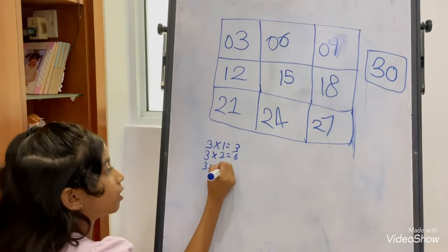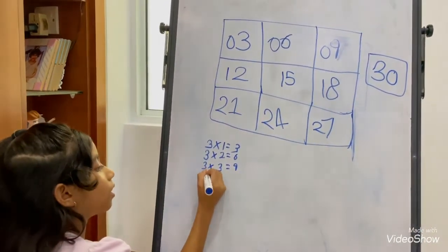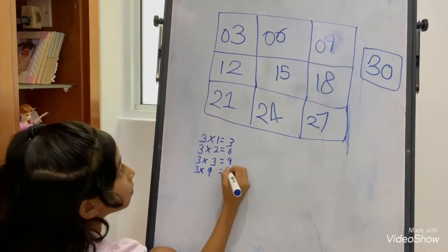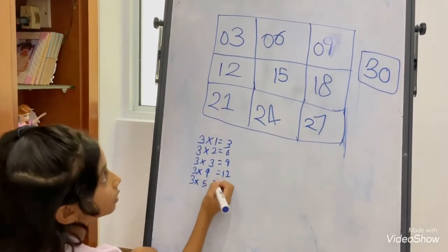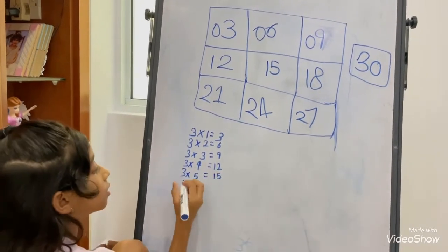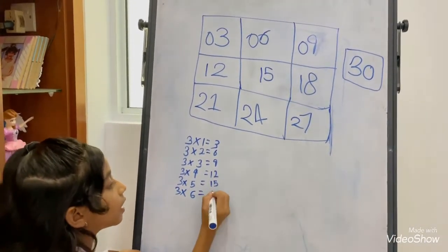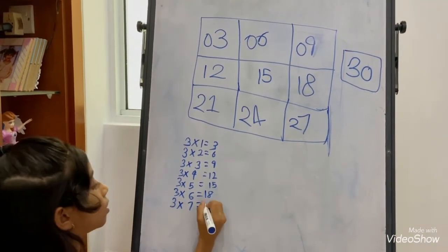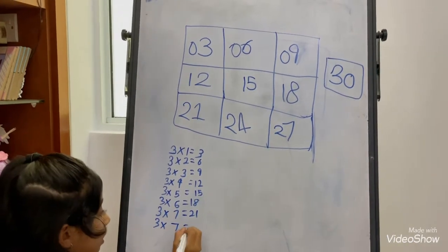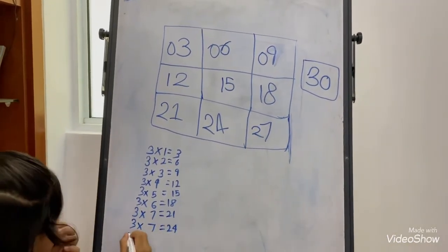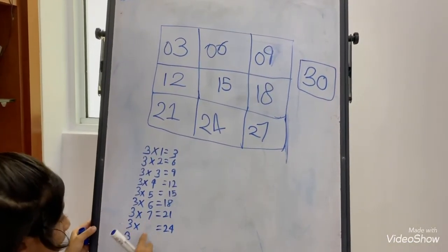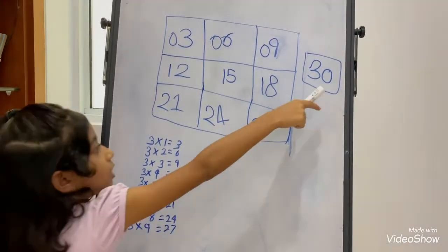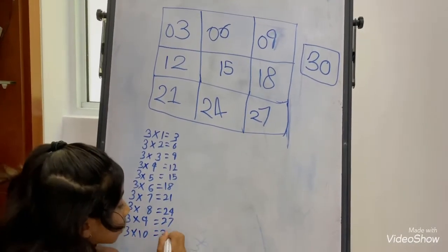3 times 1 equals 3, 3 times 2 equals 6, 3 times 3 equals 9, 3 times 4 equals 12, 3 times 5 equals 15, 3 times 6 equals 18, 3 times 7 equals 21, 3 times 8 equals 24, 3 times 9 equals 27, and mostly 3 times 10 equals 30.